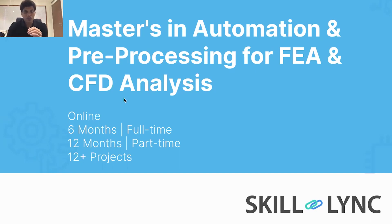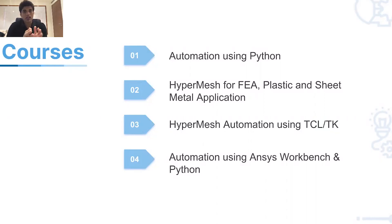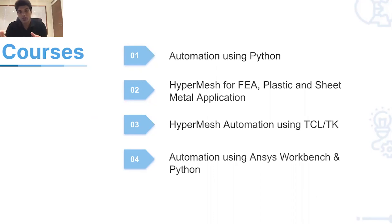This master course has seven courses in it. The first is Automation Using Python. As the world moves into automation, you as a pre-processing engineer need to automate a lot of your work, and Python is the tool you'll likely use — for example, automating tasks in ANSA. The second course is Hypermesh for FEA Plastic and Sheet Metal Applications, which is a pure pre-processing coursework using one of the industry-leading pre-processing softwares.